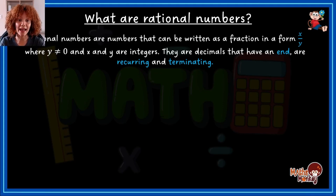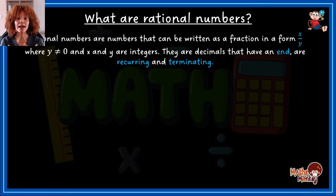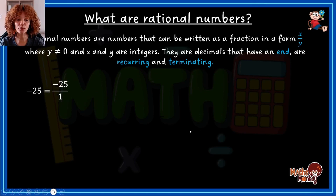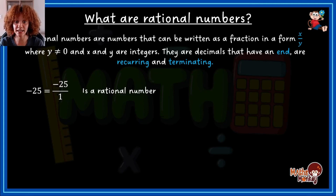A rational number is in the form x over y, where y cannot equal zero (because that would be undefined) and x and y are integers. There are also decimals that are ending, recurring, or terminating. In simple terms, a rational number can be written as a fraction a over b. For example, negative 25 is rational because it can be written as negative 25 over 1.